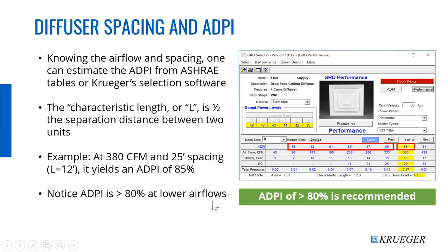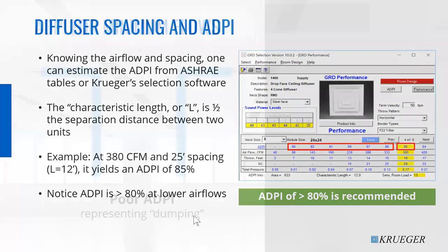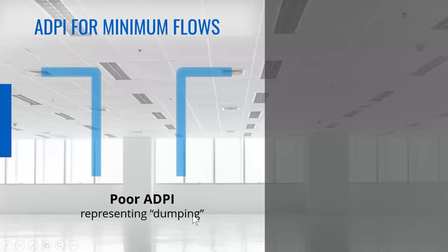ASHRAE recommends an ADPI greater than 80% to get the most people satisfied — there's a bell-shaped curve of human response. Notice that ADPI goes up as airflow goes down with most diffusers, but not all. What is the consequence of having a poor ADPI? There are two things that can happen: the jets can collide, or the airflow cannot make it very far and, being cold, falls into the space — resulting in what we like to call excessive drop. Unless of course it's a competitor's diffuser, and then the sucker is dumping.